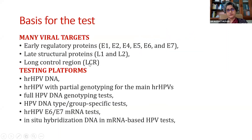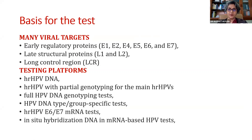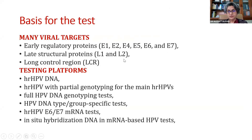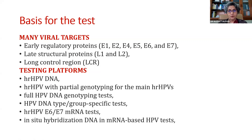As pathologists and molecular pathologists, we need to understand which test to use depending on its basis. The early regulator proteins that many tests utilize are E1 to E7. Then you have the late structural proteins L1 and L2, and the long control region, the LCR. Most tests will target either of these, and some use the mRNA while most use the DNA of the virus to detect it.